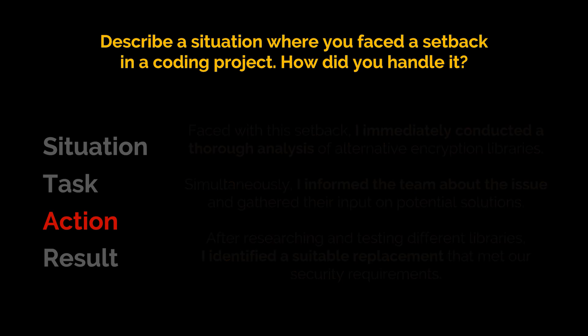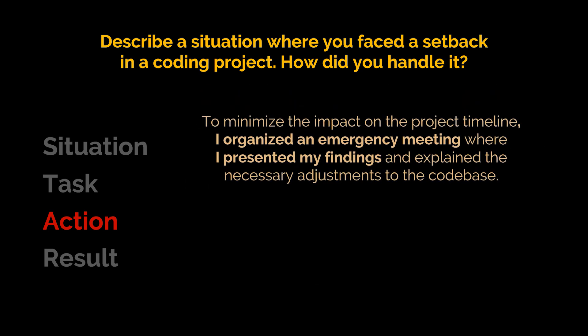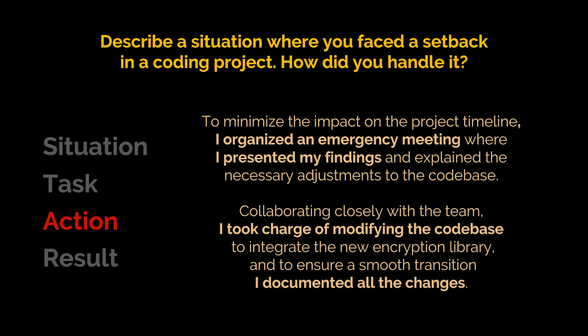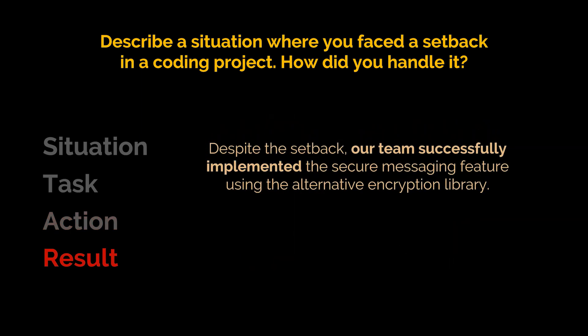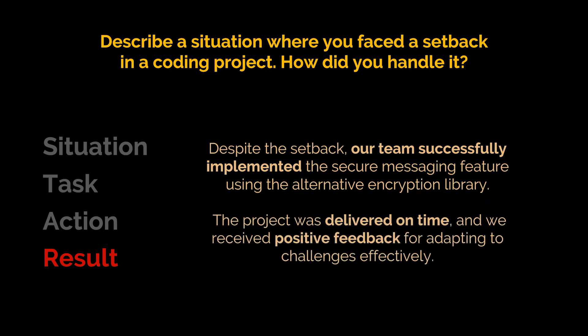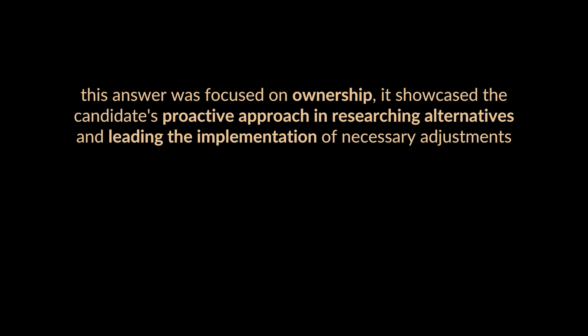After researching and testing different libraries, I identified a suitable replacement that met our security requirements. To minimize the impact on the project timeline, I organized an emergency meeting where I presented my findings and explained the necessary adjustments to the codebase. Collaborating closely with the team, I took charge of modifying the codebase to integrate the new encryption library and documented all the changes to ensure a smooth transition. Despite the setback, our team successfully implemented the secure messaging feature and delivered the project on time, receiving positive feedback for adapting to changes effectively.